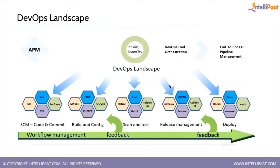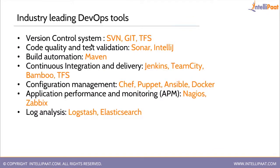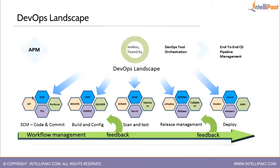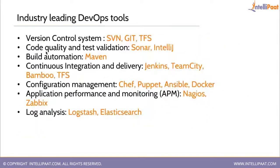These are the various categories of tools used in the DevOps landscape. Moving on to version control systems: as mentioned, for code and commit we use tools like Git, SVN, and TFS. When five developers write code and commit it, they commit it into a version control system. The most commonly used today is Git, though SVN and TFS are also used.